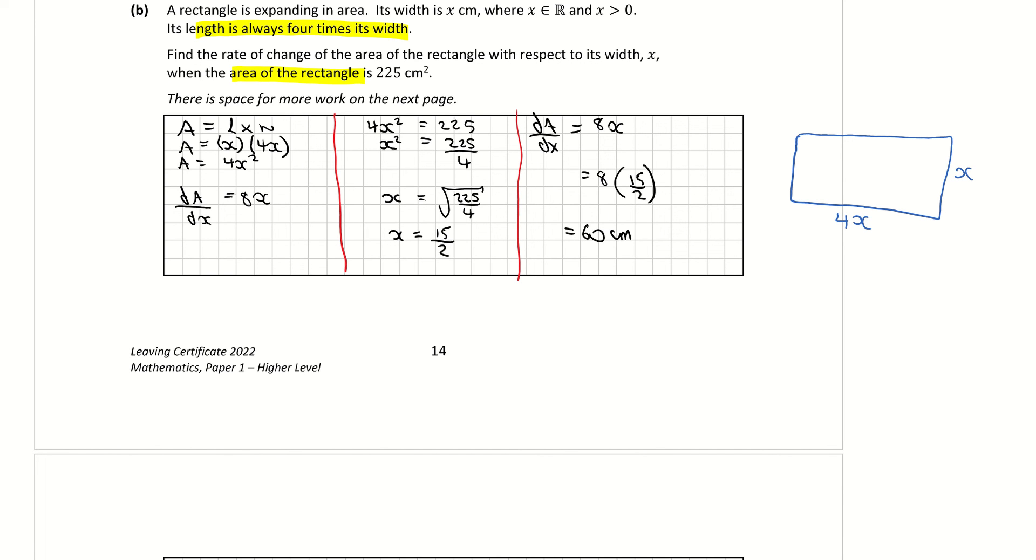What's it asking? Find the rate of change of the area of the rectangle. Yeah. So that would be 60 centimeters squared. That's the change in the area with respect to the sides which are in centimeters. So maybe something like that. 60 centimeters squared per centimeter.